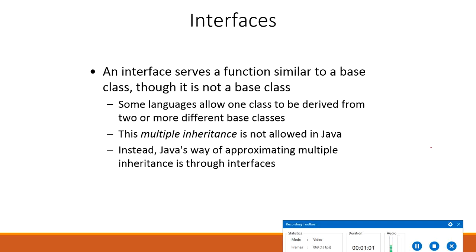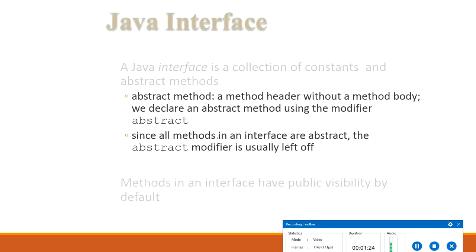It is the responsibility of the class that implements an interface to define the code for the implementation of these methods. An interface basically serves a function similar to a base class, but it is not a base class. Some languages allow multiple inheritance — not allowed in Java through classes, but it is possible with the help of interfaces.